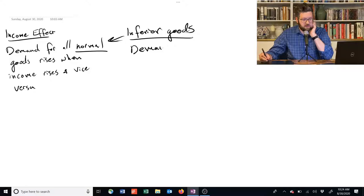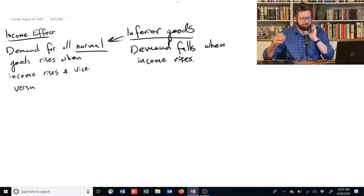So demand falls when income rises. So what's an inferior good?